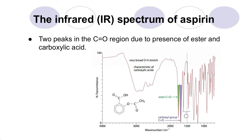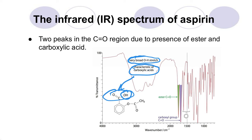We can also look at the infrared spectrum of aspirin because it has a very characteristic pattern. We get a very broad O–H stretch from the OH of the carboxyl group, which is really characteristic of the carboxylic acid portion of the compound. We also get two characteristic peaks in the C=O region — one is due to the presence of the ester and the other is due to the presence of the carboxylic acid — making it a great way to recognize that an infrared spectrum is of aspirin.